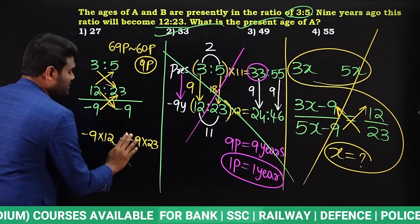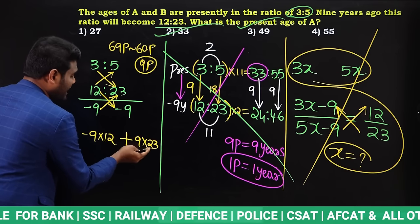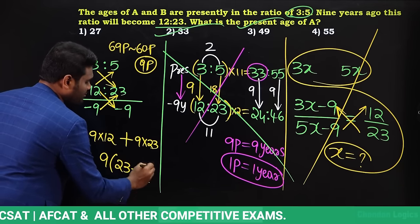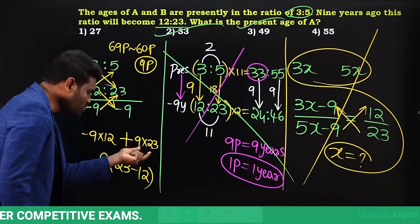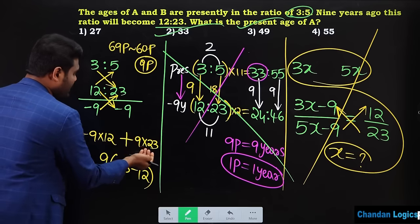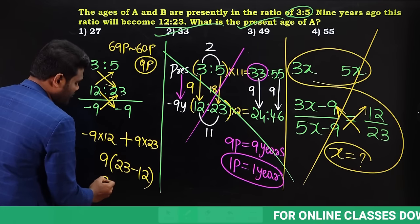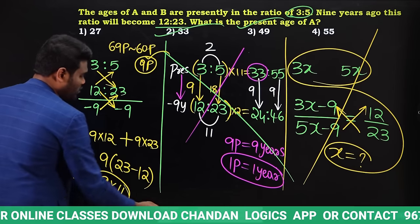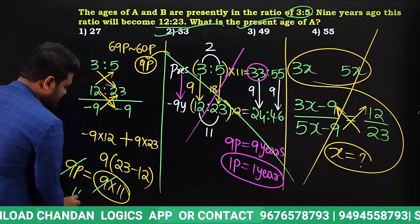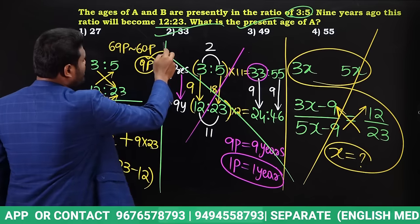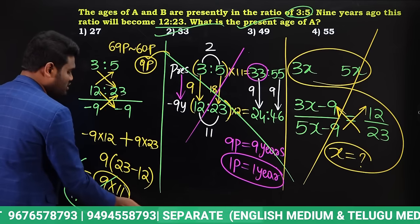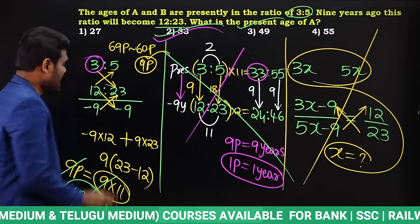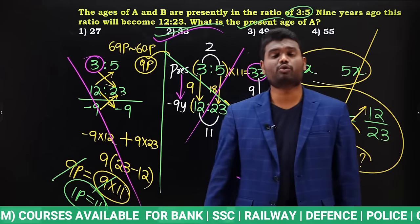On the other side, taking 9 common: 9×23 minus 9×12 = 9×(23−12) = 9×11. So 9 parts equals 9×11, and 9 cancels, giving 1 part = 11. Present age of A is 3 parts, so 3×11 = 33 years. Even this method takes time in an exam.